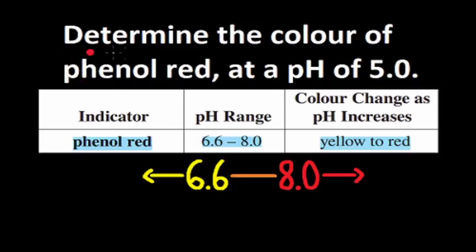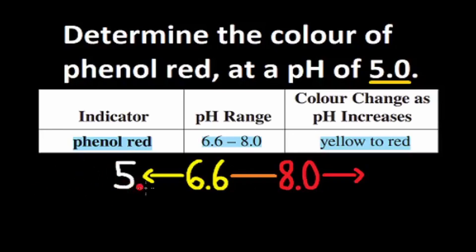The problem wants us to determine the color of phenol red at a pH of 5.0. A pH of 5 is not greater than 8, it's not in between 6.6 and 8.0, it's less than 6.6, so a pH of 5 would go here. We said that all pHs less than 6.6 would be yellow, so the color of phenol red would be yellow.